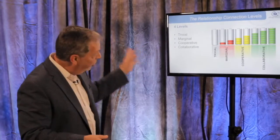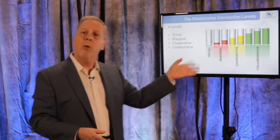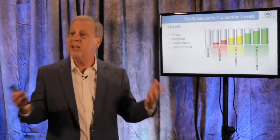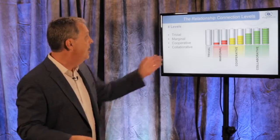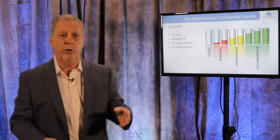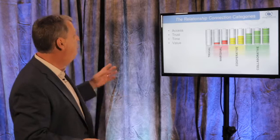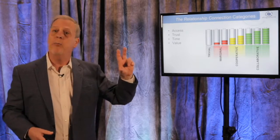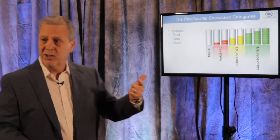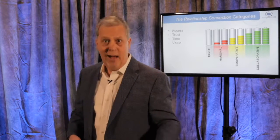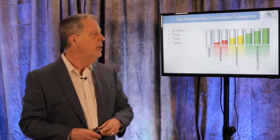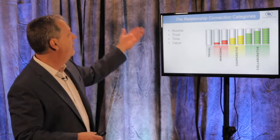Before we go through each level, I want to explain the criteria we came up with to distinguish between trivial, marginal, cooperative, and collaborative relationships. The four criteria are: access, trust, time, and value — and value is the really big one, but we'll get to that in a bit. So let's talk about access.